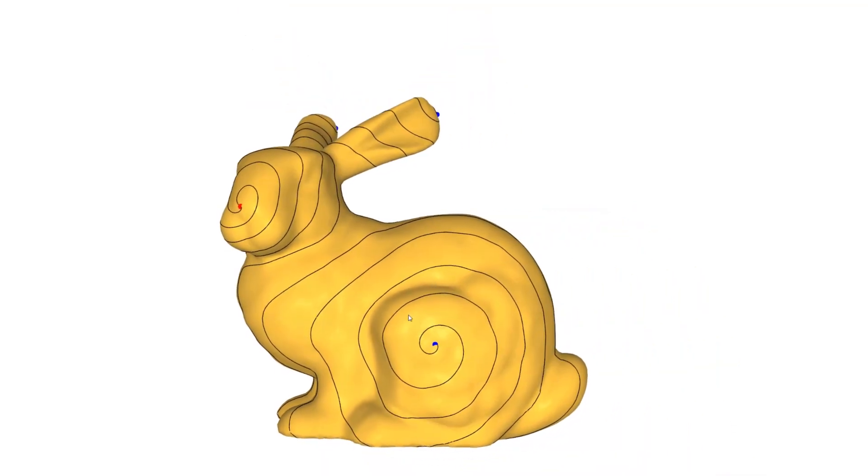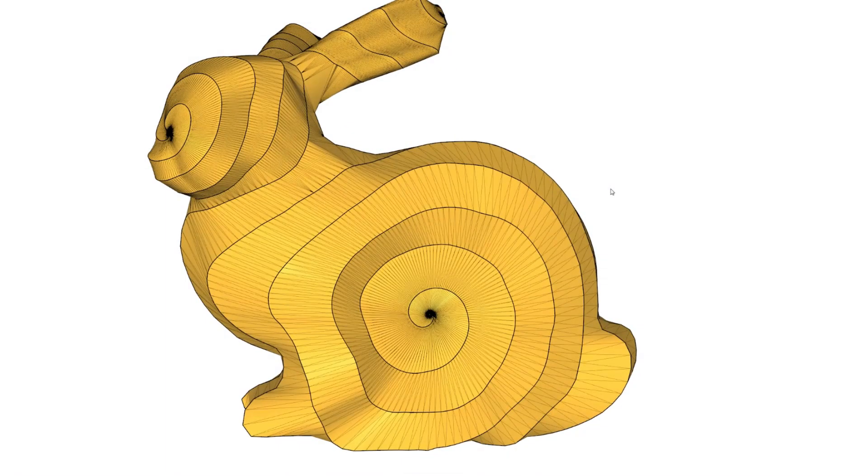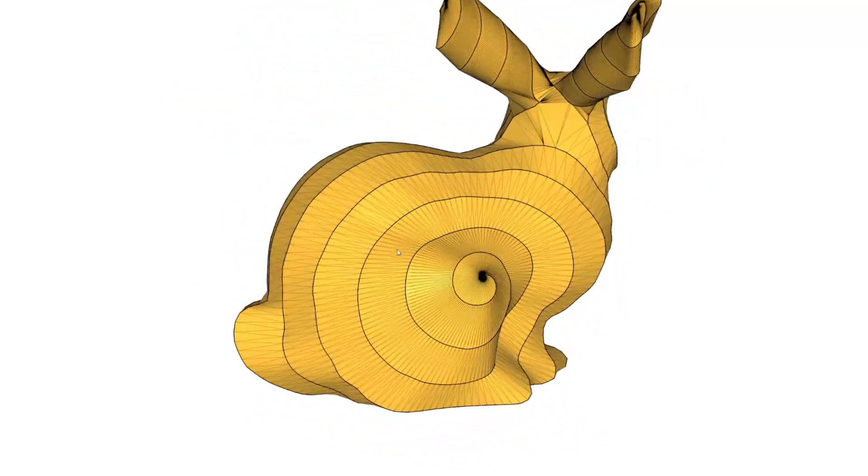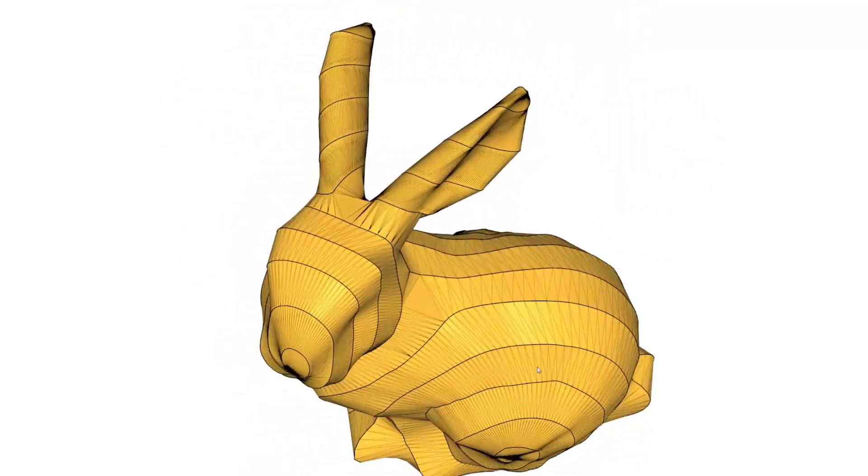Once the design is finalized, the shape is remeshed to create a single developable piece. This developable piece is trivially flattened to the plane, and overlapping parts are separated to create the cutting plans.